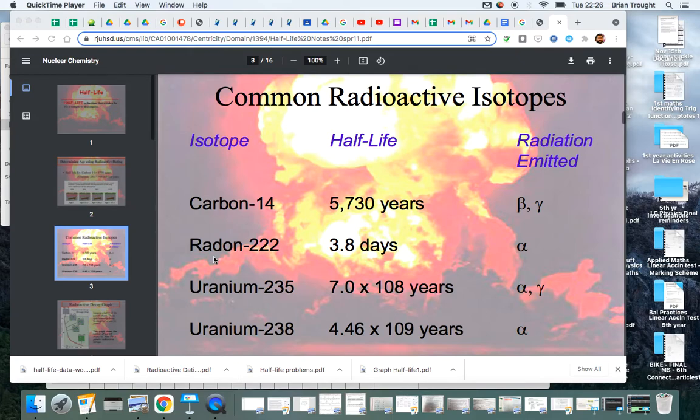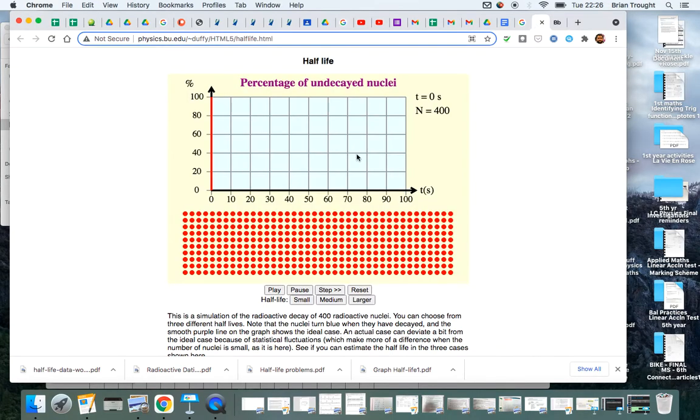And just to show you an animation on it, I have here a lot of red dots, which are representing the number of undecayed nuclei, and there are 100 dots here. So we're going to start here. At time equals 0, there'll be 100 dots. And what we'll do is, we'll start this going,